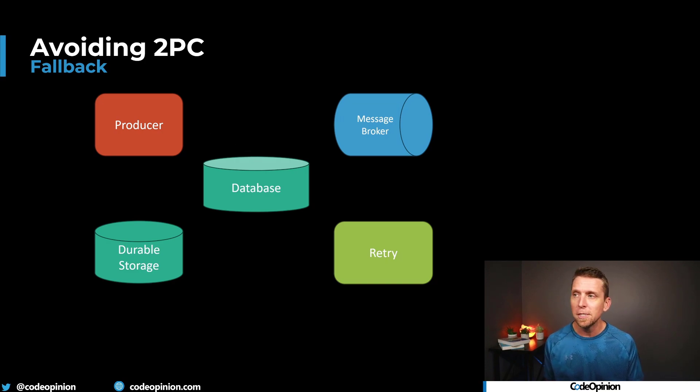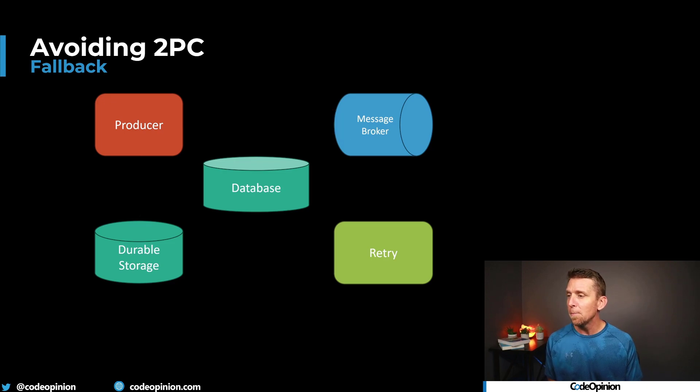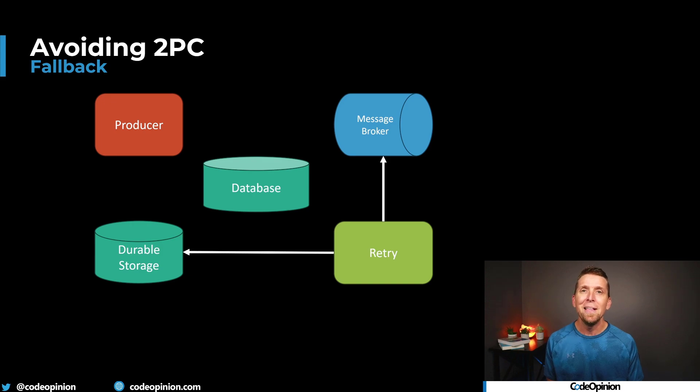Another common solution is having a fallback — I'll link to a video about McDonald's using this technique. When your producer saves its state to the database and needs to publish that order placed event to the message broker and that fails, you push that event data to some other durable storage. In McDonald's' case this was DynamoDB, and from there they had a retry mechanism — an AWS Lambda that fetched that data out of durable storage and published it to the message broker. I think the listen-to-yourself pattern has value but only in the right context. It doesn't work when what you really want is a command — putting a message on a queue saying 'do something' — rather than saying something happened when it didn't, leaving other consumers in a potential race condition or failure state.